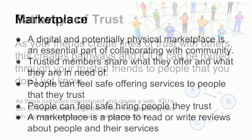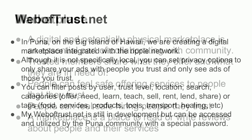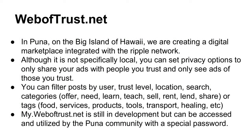The marketplace. A digital and potentially physical marketplace is an essential part of collaborating with community. Trusted members share what they offer and what they are in need of. People can feel safe offering services to and hiring people that they trust. A marketplace is a place to write and read reviews about people and their services. At weboftrust.net in Puna on the big island of Hawaii, we are creating a digital marketplace integrated with the Ripple network. You can set privacy options to only share your ads with people you trust and only see ads of those you trust. You can filter posts by user, trust level, location, search, and categories — like offering, needing, learn, teach, sell, rent, lend, or share — and by tags like food, services, products, tools, transport, or healing.